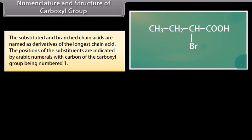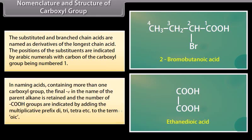The positions of the substituents are indicated by Arabic numerals, with the carbon of the carboxyl group being number 1. In naming acids containing more than one carboxyl group, the final 'e' in the name of the parent alkane is retained, and the number of carboxyl groups is indicated by adding the multiplicative prefix di, tri, tetra, etc. to the term 'oic'.